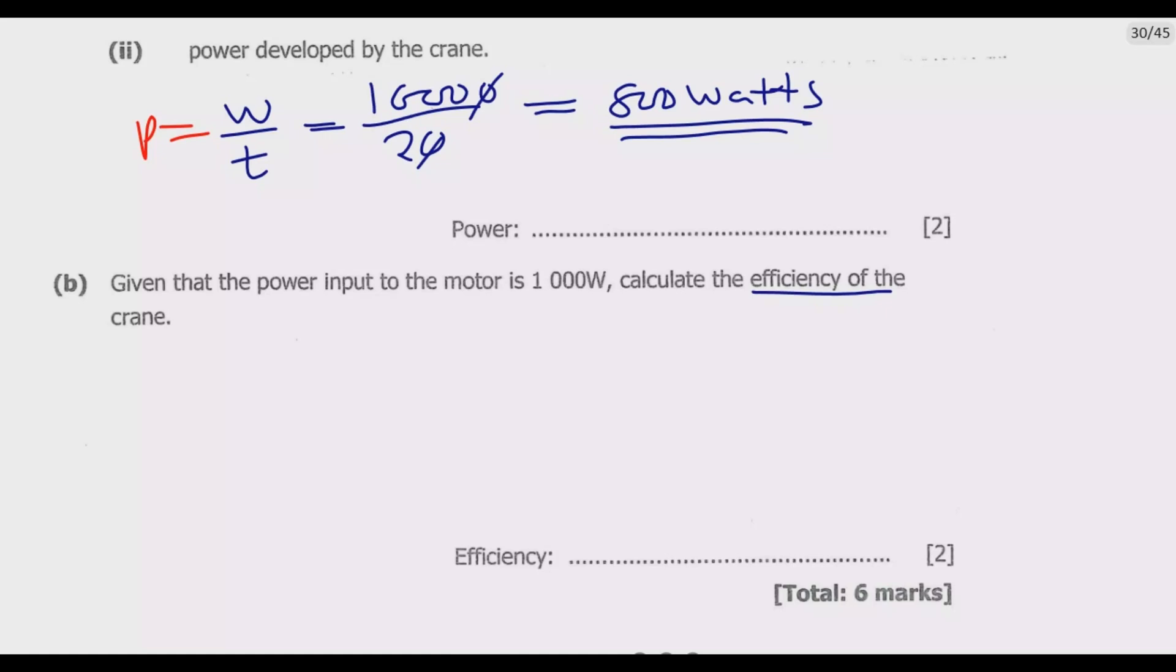It's important to understand the question. If you understand the question, everything becomes simple. There are two ways we can find efficiency: efficiency equals work output over work input times 100 percent. The second formula is efficiency equals mechanical advantage over velocity ratio times 100. In this case, we'll use the first one.